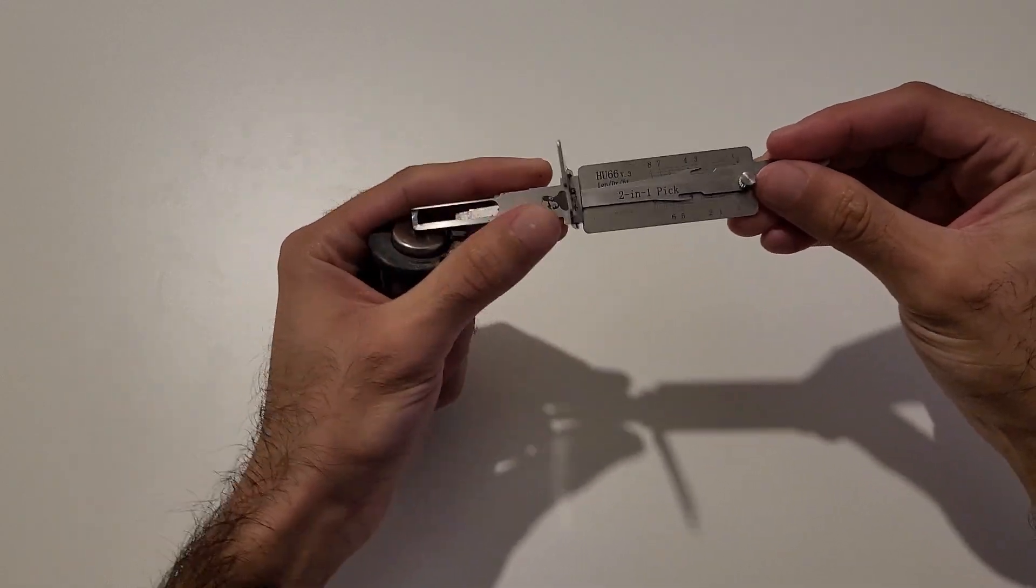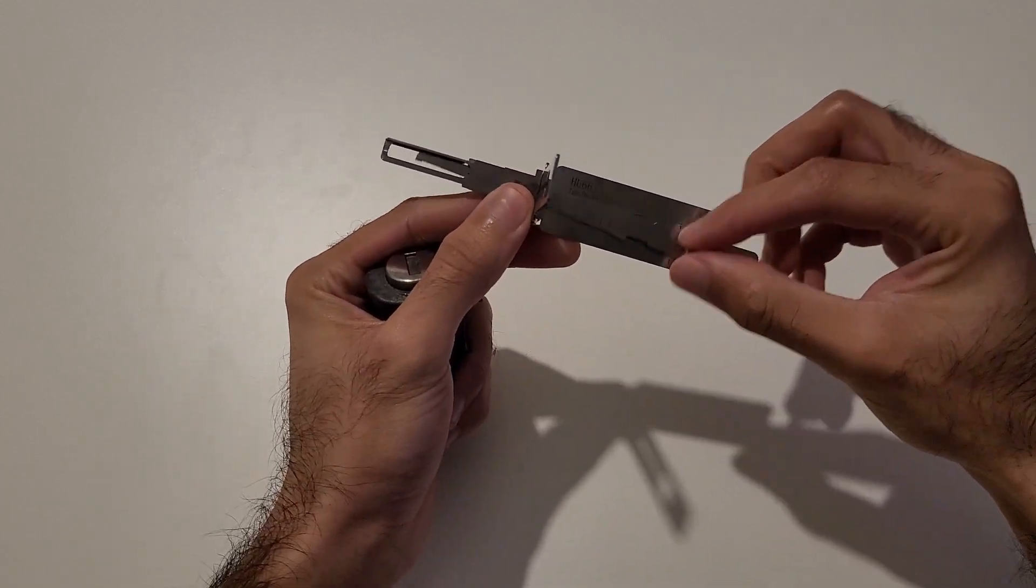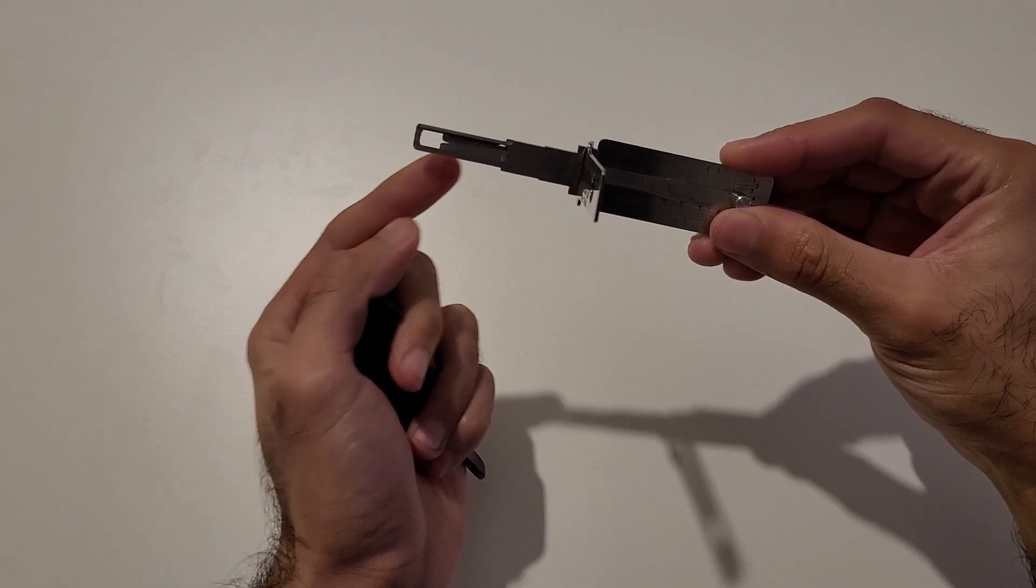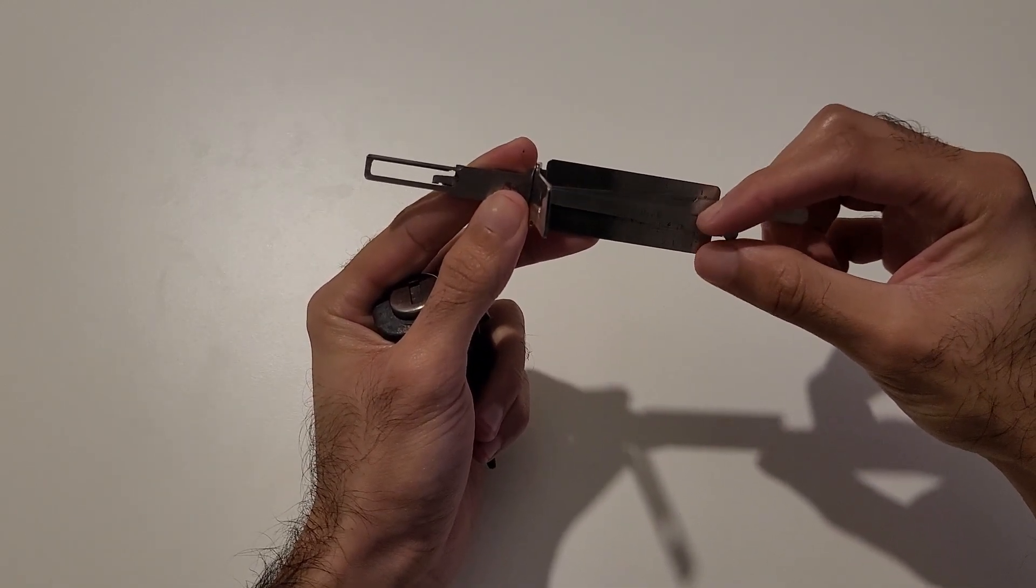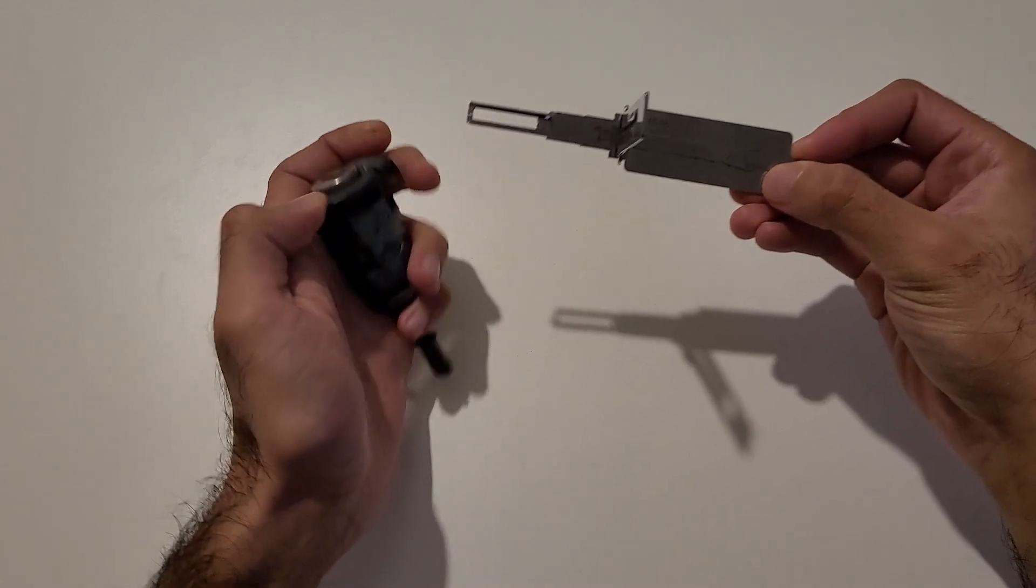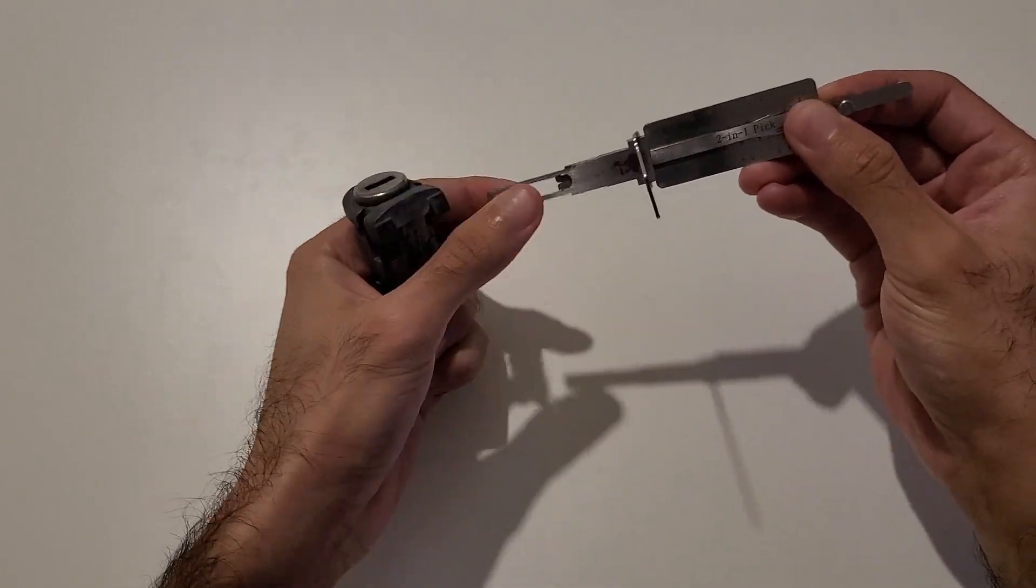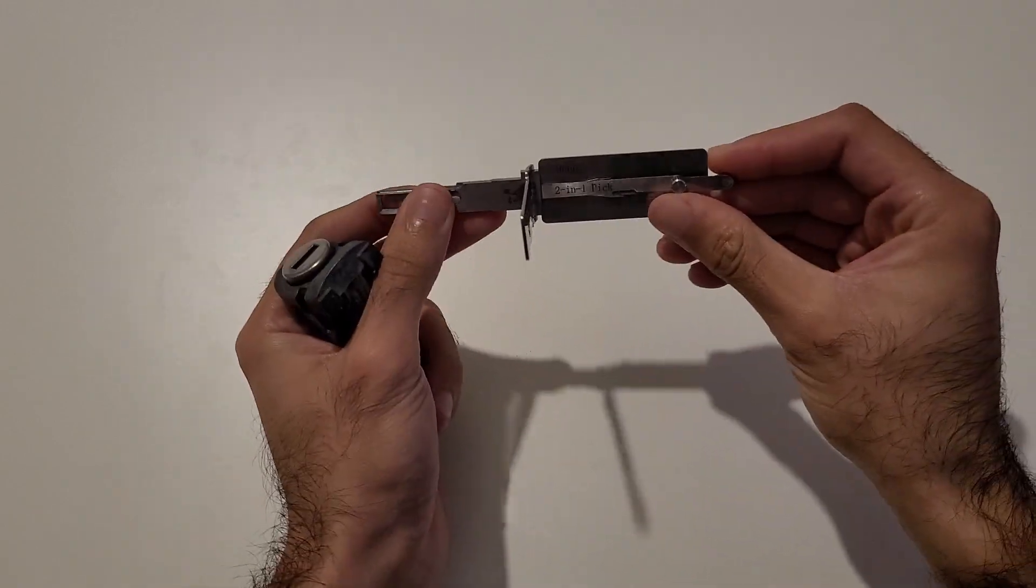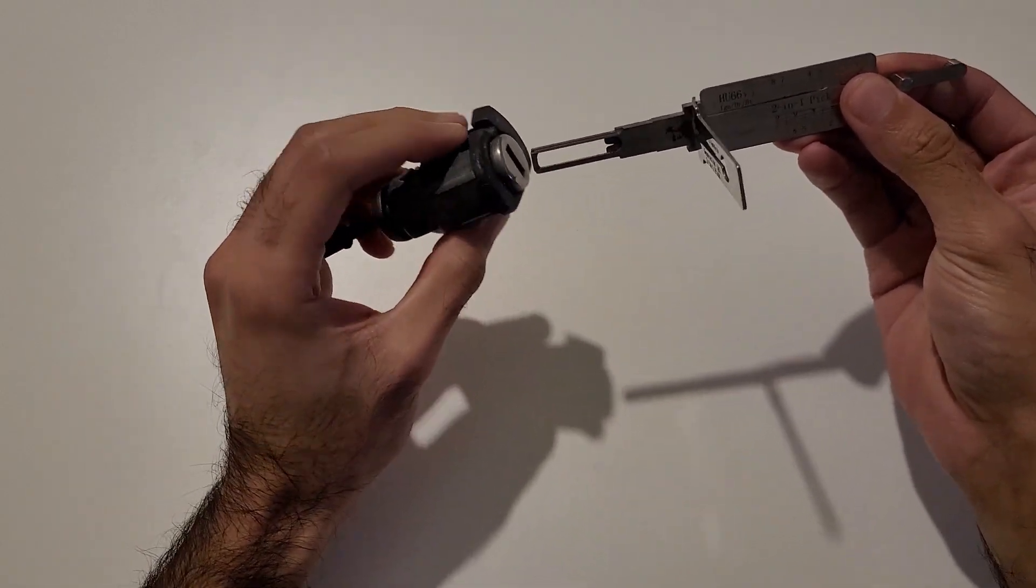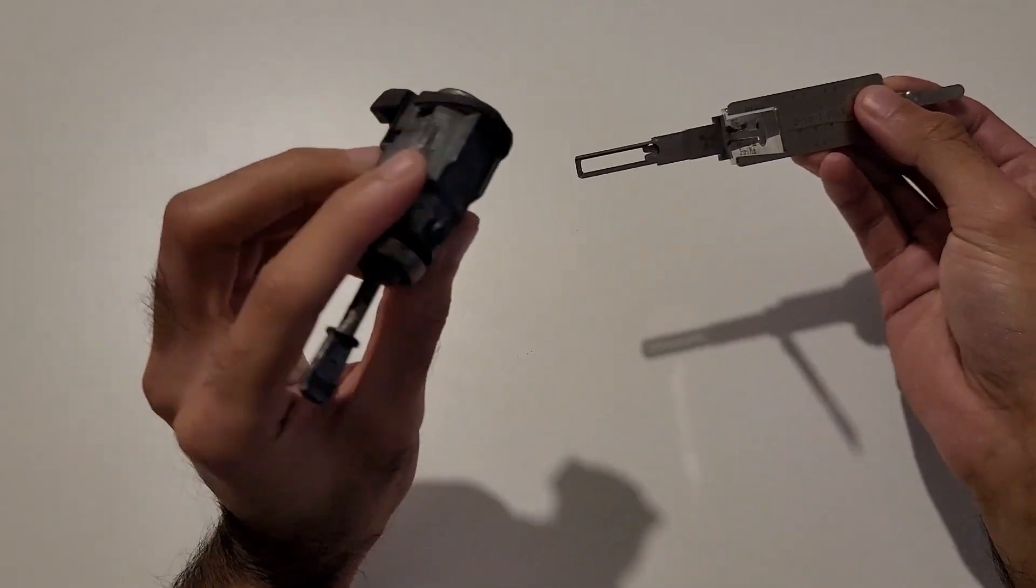On the right-hand side of the tool you'll see there are these two arms which move around. If you look closely, they attach to a couple of prongs on the left-hand side, and those are used for actually pushing the wafers inside of the lock for opening it. When you insert the tool, make sure both of these arms are fully retracted and in the middle, otherwise it might get caught as you're pushing it in.